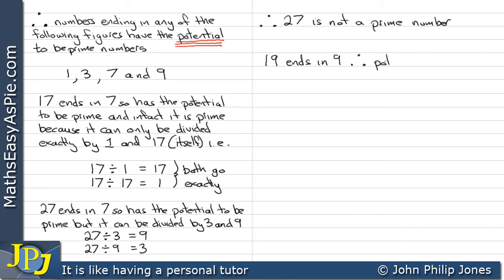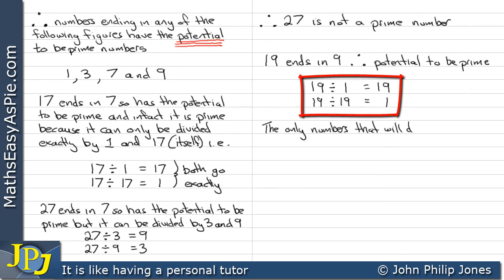19 ends in 9, therefore potential to be prime. We can see it can only be divided by 1 and 19. The only numbers that will divide are 1 and 19, therefore 19 is prime.